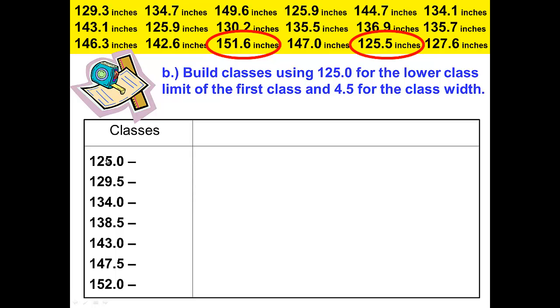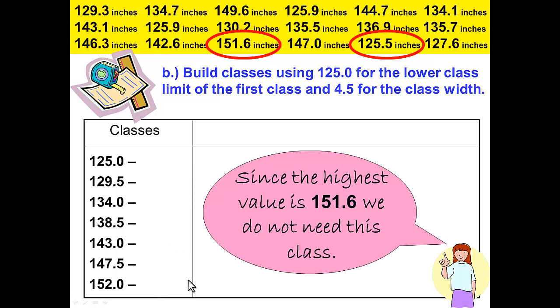We knew that 125 was a good place to start because it is lower than our lowest data item. We know that we don't need to start with the class at 152 because it's above 151.6, since the highest value is 151.6. We do not need a class that starts at 152, so we can mark that out. But notice we don't want to mark it out where we can't see it. We want to still be able to read it because it may be useful to us in the next slide.